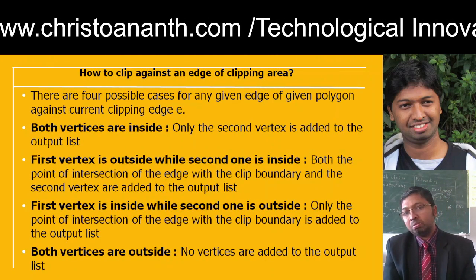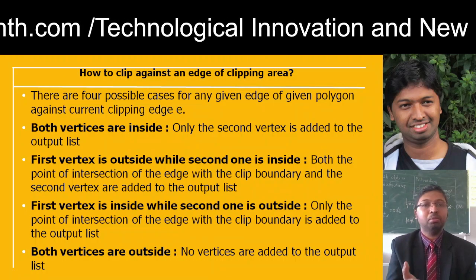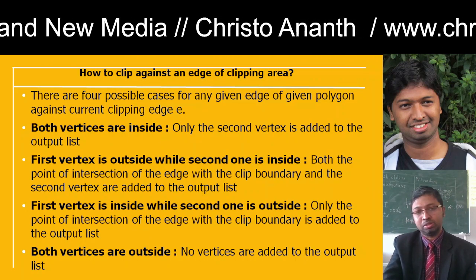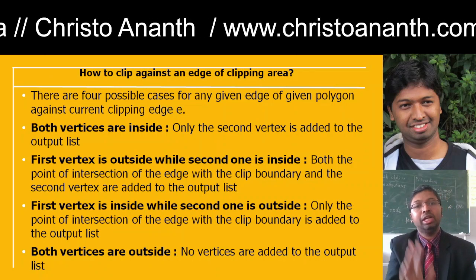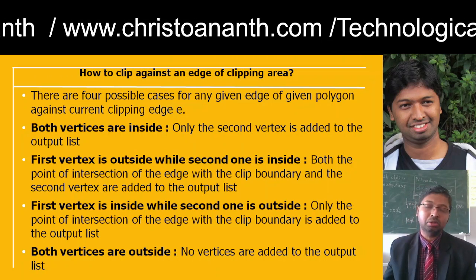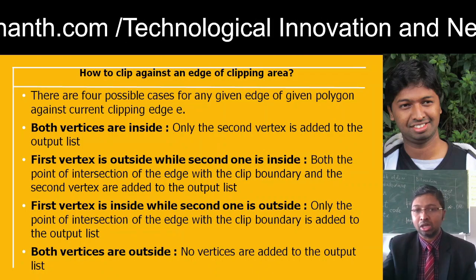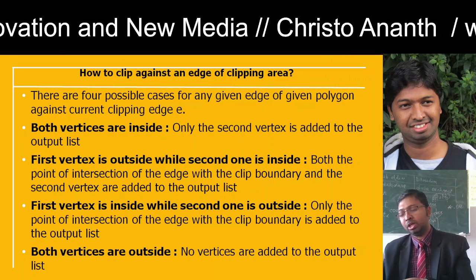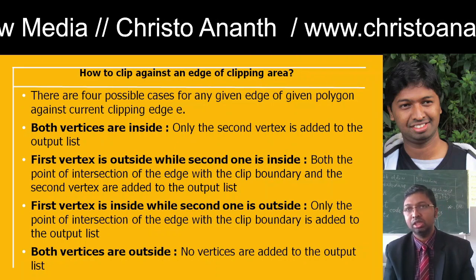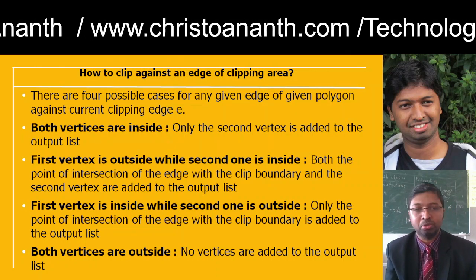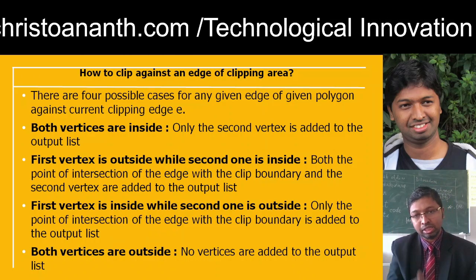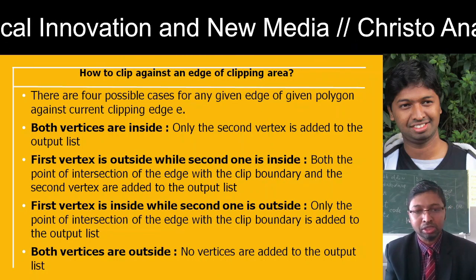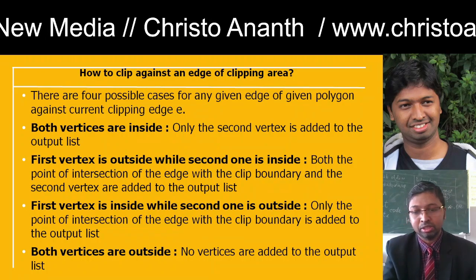There are four different cases: both vertices can be inside, first outside and second inside, first inside and second outside, or both outside. If both vertices are inside, you add only the second vertex. If first is outside and second is inside, you add the point of intersection and the second vertex. If first is inside and second is outside, only the point of intersection is added. If both are outside, no vertices are added to the output list.